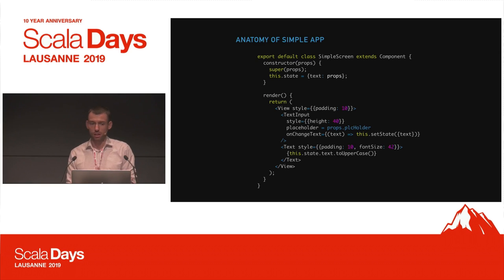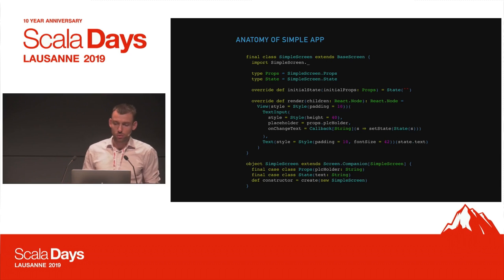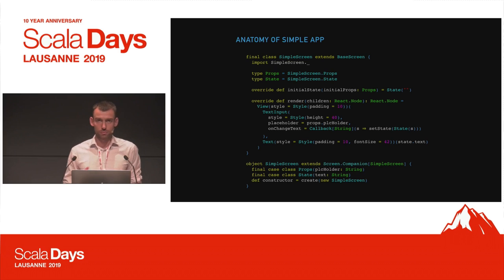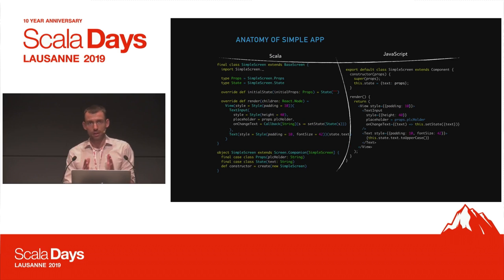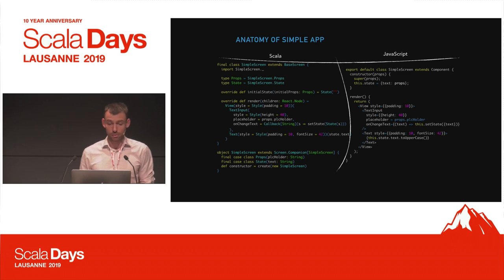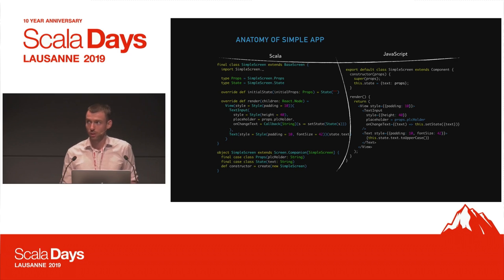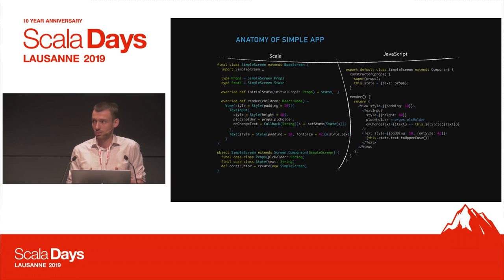What does the anatomy of a simple app look like? Looking at the JavaScript code and translating it to Scala using SCAR — they are structurally the same, so if you're familiar with React Native concepts you can quickly understand what's going on. The difference is that on the Scala side we have typed objects — our props and state are case classes, not just any kind of object — and your callback is also typed, so you get a string and can benefit from everything in the standard Scala library.